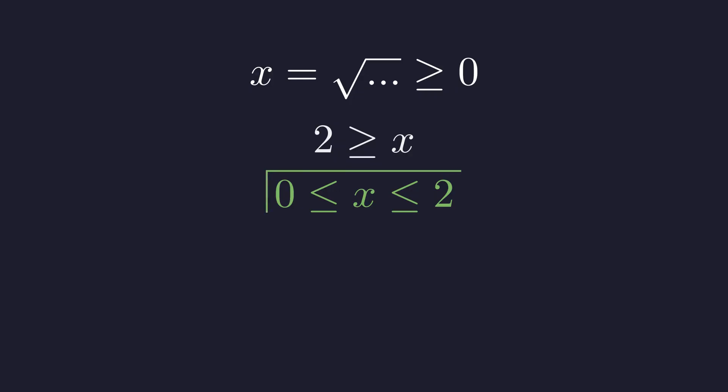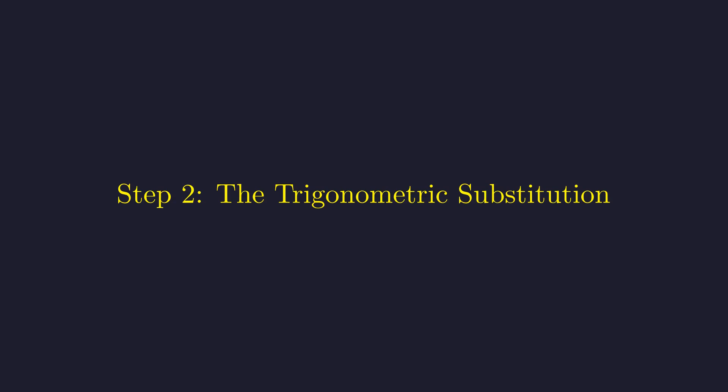This is the key that unlocks the entire problem. Now that we know x is between 0 and 2, we can make a substitution that is perfectly suited for this domain. Let us define x as 2 cosine θ. As θ ranges from 0 to π over 2, 2 cosine θ traces all values from 2 down to 0. This substitution perfectly parameterizes our domain.